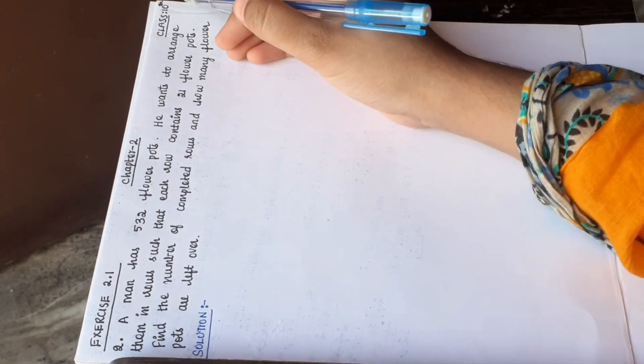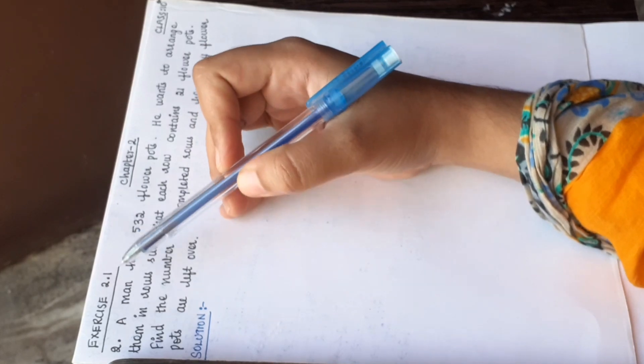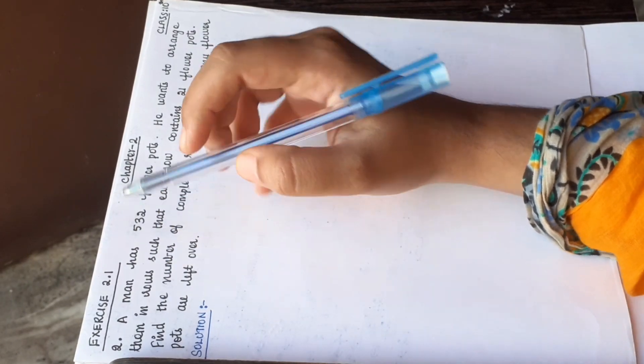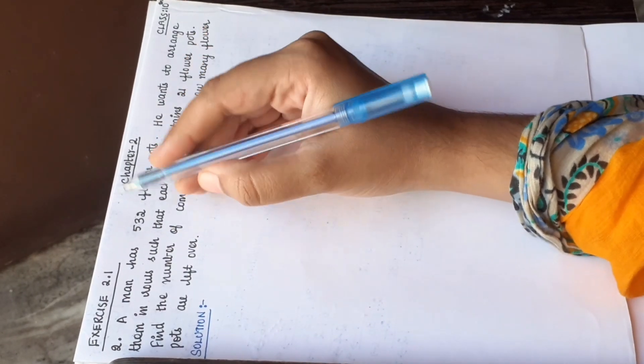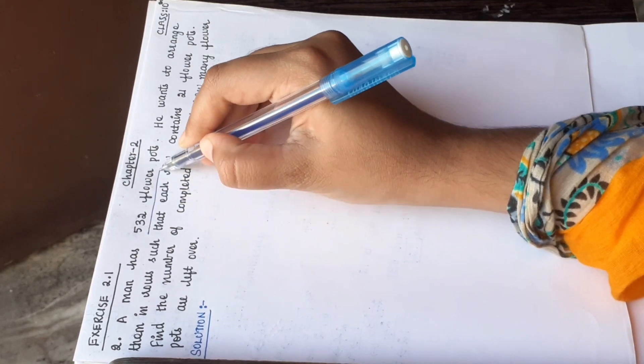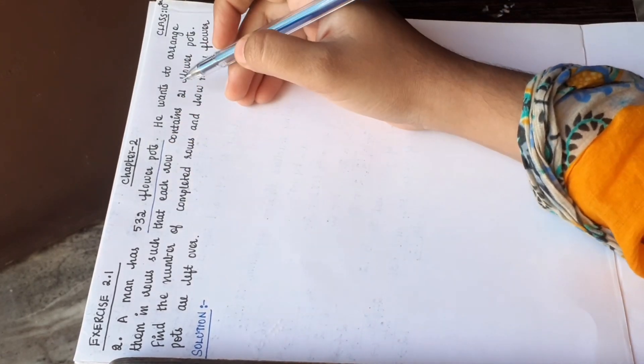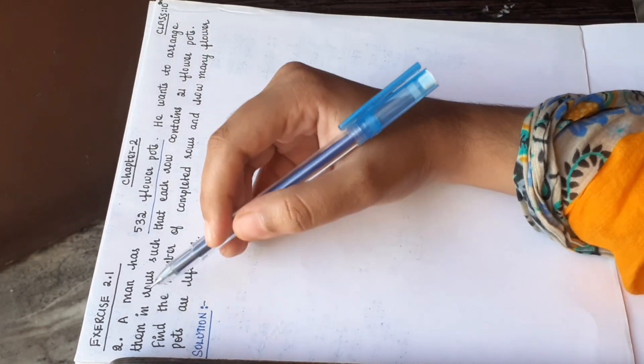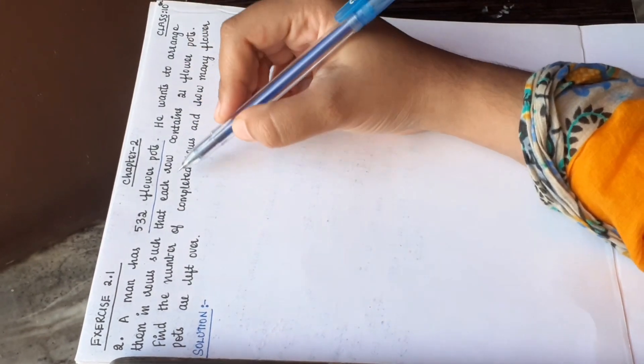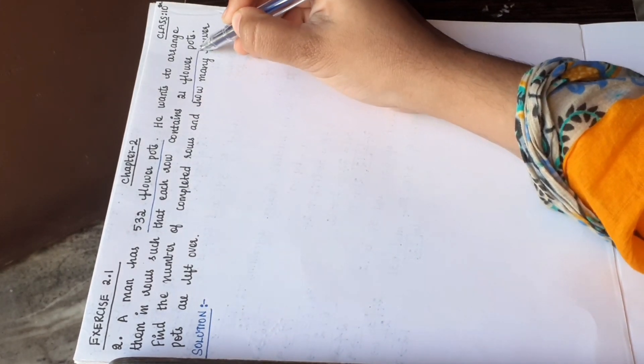Welcome to Rifasmax 10 standard chapter 2 exercise 2.1 second one. A man has 532 flowerpots. He wants to arrange them in rows such that each row contains 21 flowerpots.